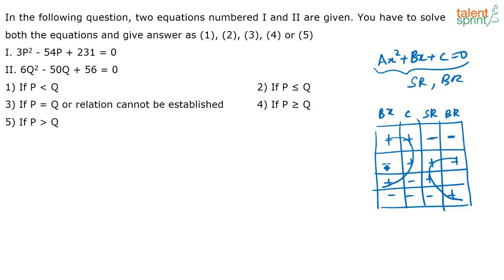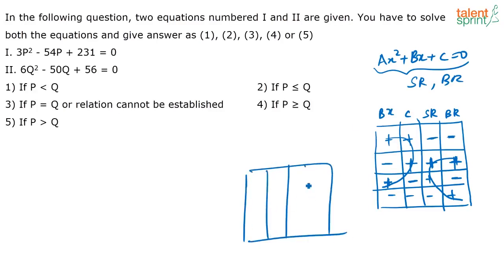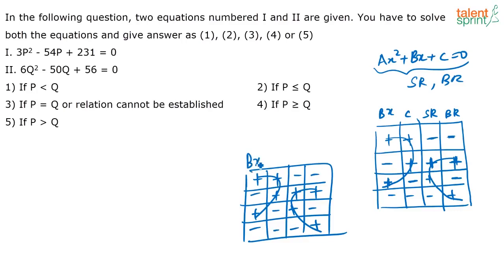Similarly, if the sign before bx is minus and the sign before c is plus, then both roots — the smaller and the larger — will be positive. When the sign before bx is positive and the sign before c is negative, the smaller root will be positive and the larger root will be negative. This diagram has four columns: bx, c, smaller root, and bigger root — that's all you have to remember.